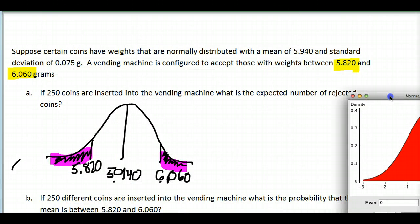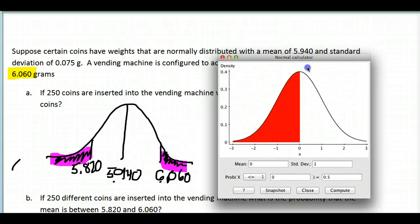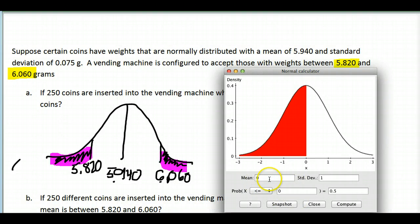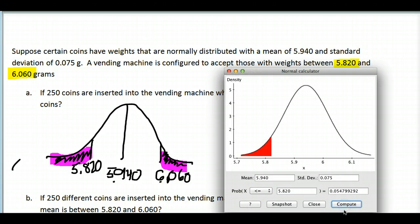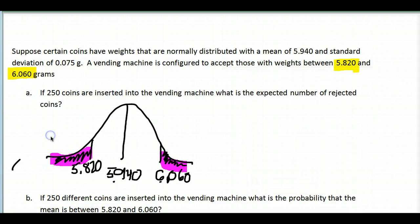I'm going to move my StatCrunch out of here and bring my calculator back. Now I want to find out what's going to be rejected. It asks me to fill in a couple things. First off, the mean is given to me, 5.940, as is the standard deviation. I want to know what are less than 5.820. Anything less than 5.820 grams is going to be rejected. So I'm going to ask it to compute this value for me. You'll see right here that it gives you a picture that looks kind of like my picture, and it gives you the value right here. So let's go ahead and write this down.